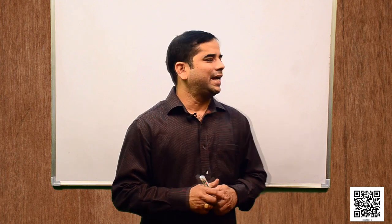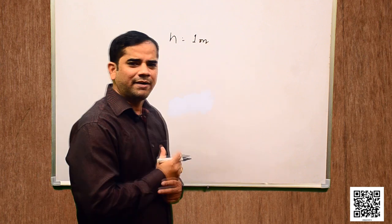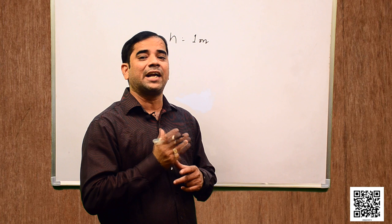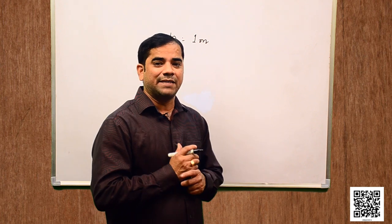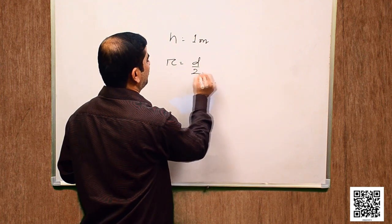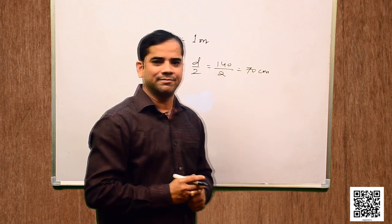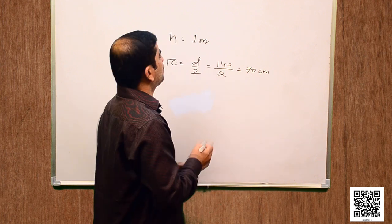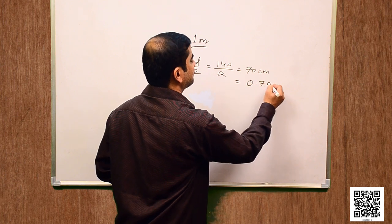So, what is given? Height of the cylinder is given, so h is equal to 1 meter. Then the base radius of the cylindrical tank: it is d by 2. The diameter is given as 140 centimeter, so r is equal to 140 by 2, that is 70 centimeter. Because we are dealing with meters, let us convert it to 0.7 meter.